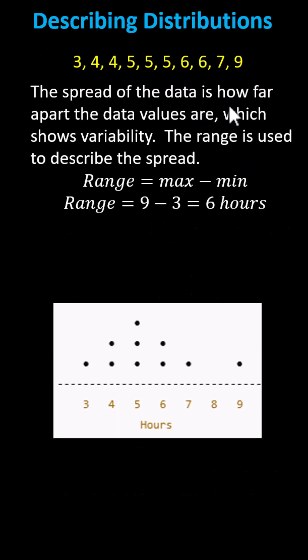The spread of the data is how far apart the data values are, which shows variability. The range is used to describe the spread. The range is equal to the maximum value minus the minimum value, which in our case is 9 minus 3, which equals 6 hours. This becomes even more valuable when comparing multiple sets of data.